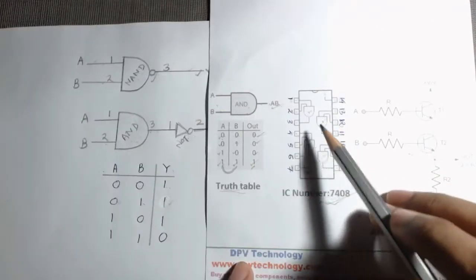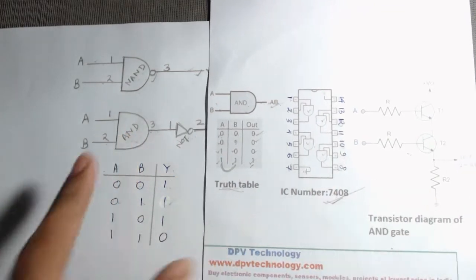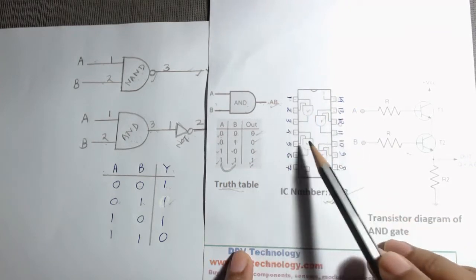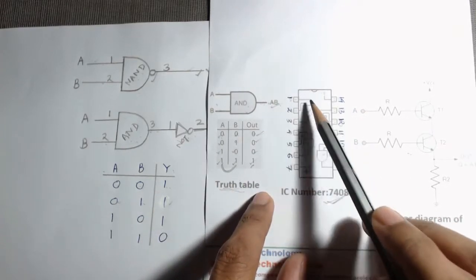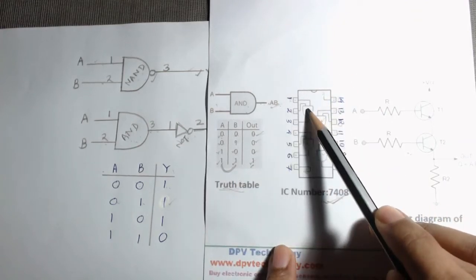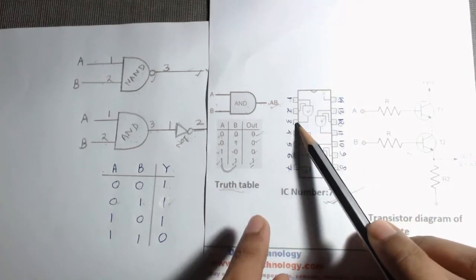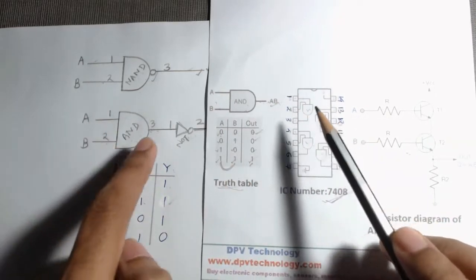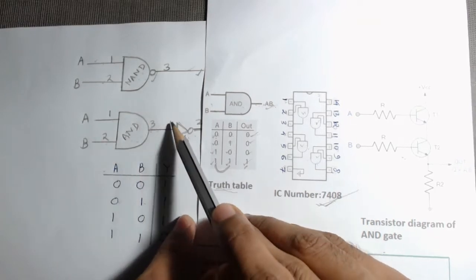Here is the IC diagram of an AND gate. The IC number for the AND gate is 7408. From this diagram we can see that in an AND gate IC there are four AND gates. We will use the first AND gate — pin number 1 and 2 are the inputs of this first AND gate, and pin 3 is the output. Then the output of this AND gate is connected to the input of the NOT gate.